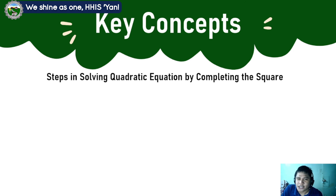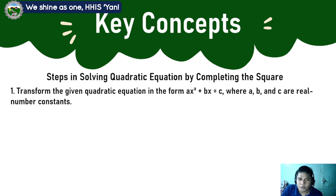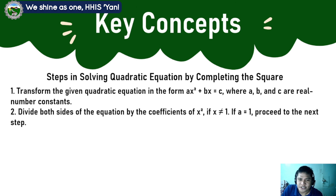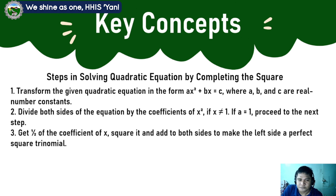We have to know the steps in solving quadratic equations by completing the square. Step 1: transform the given quadratic equation in the form ax squared plus bx equal to c, where a, b, and c are real number constants. Step 2: divide both sides of the equation by the coefficient of x squared. If a is equal to 1, proceed to the next step. Step 3: get one half of the coefficient of x, square it, and add to both sides to make the left side a perfect square trinomial.